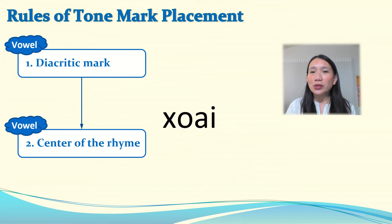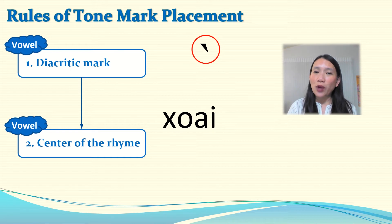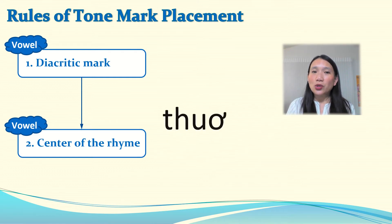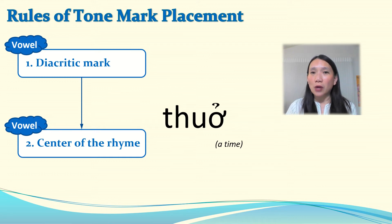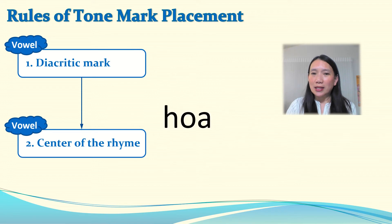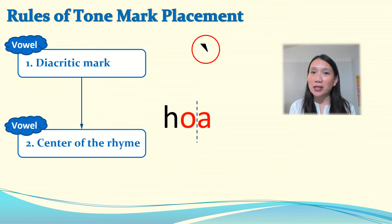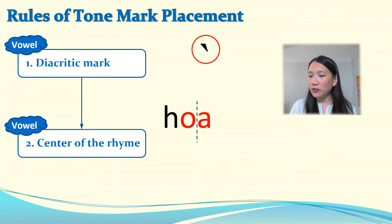Next: do we have any head or whisker? No. Second rule applies. Where is the rhyme? Where is the center of the rhyme? That is where the tone mark is placed. Next: is there a head or whisker? Yes — that is where the tone mark will be placed, and the second rule is not even considered. Next: no head or whisker. Second rule applies. Where is the rhyme? Where is the center of the rhyme? The center falls in a space between two vowels. We have two vowels equally distanced from the center — so we just choose the first one, to the left. That is where the tone mark is placed.